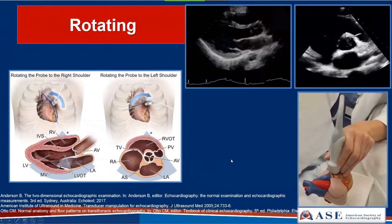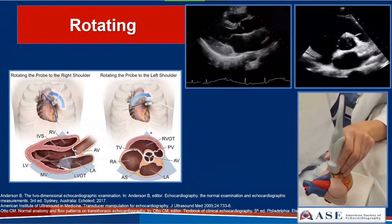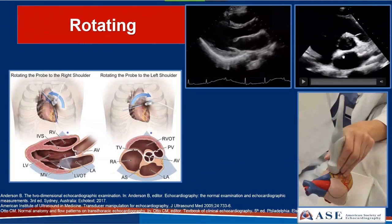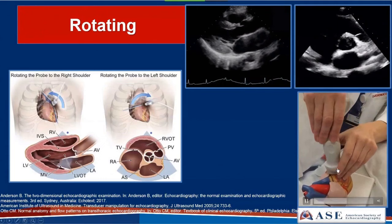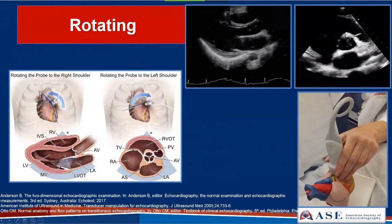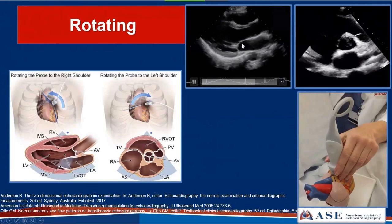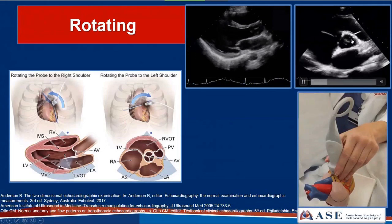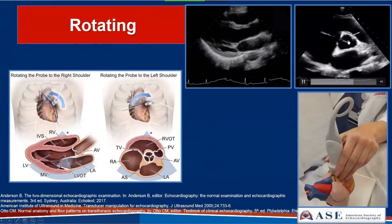The next maneuver is rotating, which is done routinely when we rotate from a long-axis view to a parasternal short-axis view. We keep the transducer in the same location and just change the orientation index. Here we've rotated 90 degrees to move from a parasternal long-axis view to the short-axis view. The orientation index is aligned towards the patient's right shoulder; we rotate 90 degrees, sliding directly over the aortic valve, to arrive at a short-axis view at the level of the great vessels.